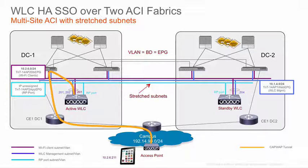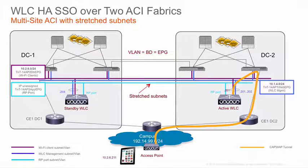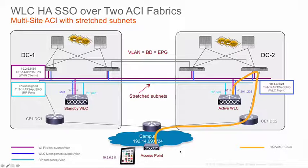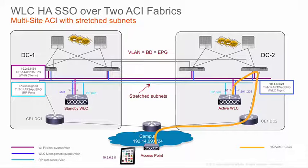What we want to show you now is that we will fail the active controller. Because there is communication between the two ACI fabrics, the standby will take over and assume the role of active. All the IP addresses that were on the other side become active on this side. From the access point's point of view, nothing has changed — it's still talking to the same management interface. The client will keep its IP address and remain happily connected. So one thing is to show you on slides; next is to show you with a real live demo.